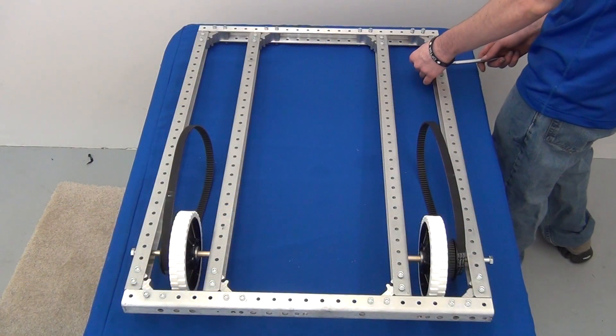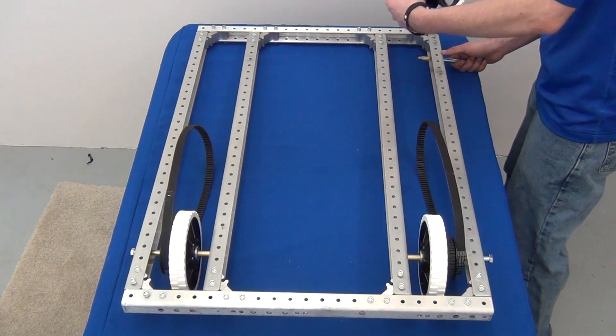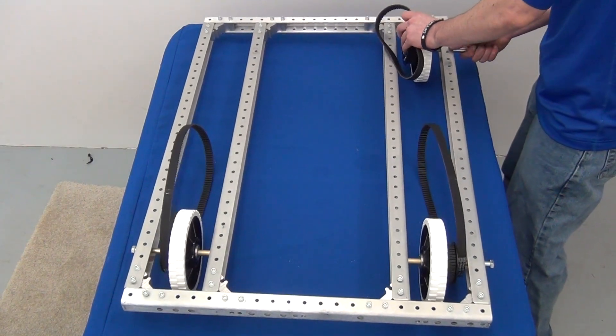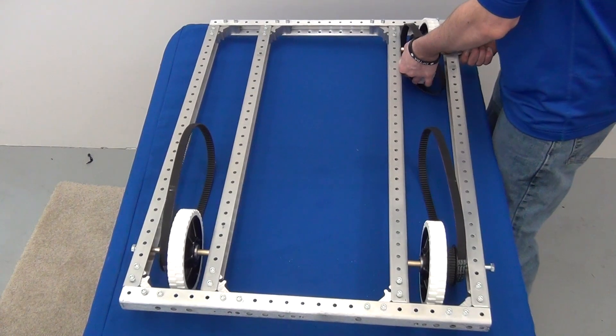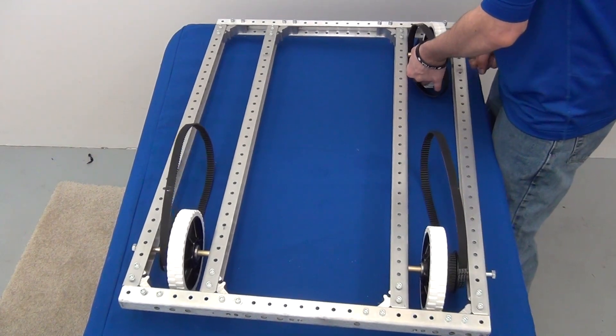Repeat the process for the other side. For the front end of the frame, ensure that the pulleys face towards the outside. For the rear wheels, ensure that the pulleys face towards the inside.